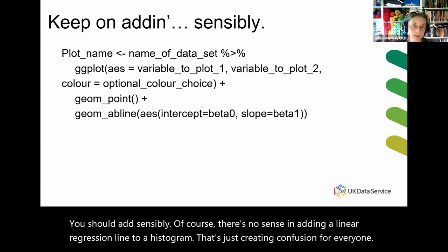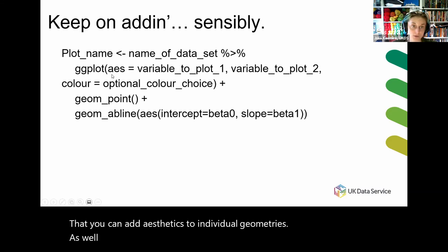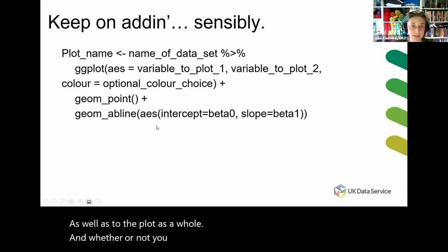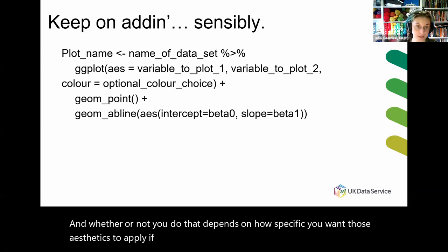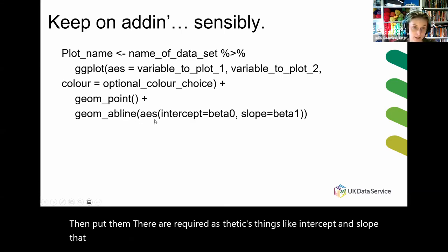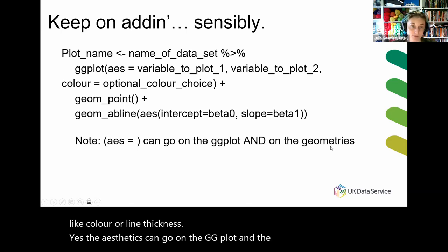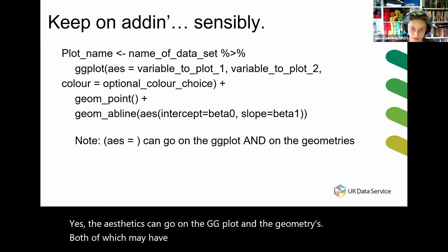You should note that you can add aesthetics to individual geometries as well as to the plot as a whole. Whether you do that depends on how specific you want those aesthetics to apply. If you only want them to apply to the line, then put them there — for instance, required aesthetics like intercept and slope that you need for an AB line, but you could also put optional ones like color or line thickness there. So aesthetics can go on the ggplot and on the geometries, both of which may have required aesthetics, and all of which will have optional ones.